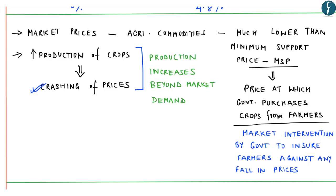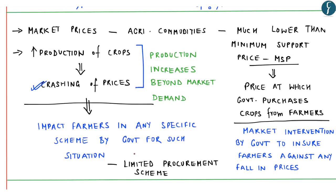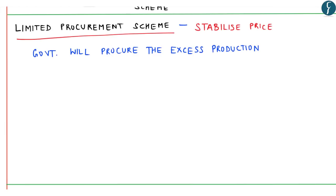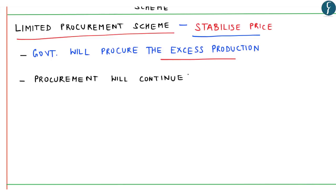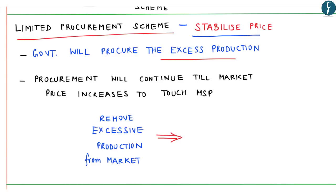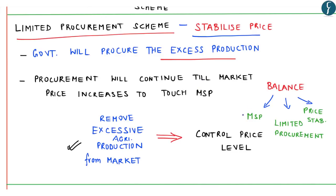This impacts farmers in the absence of any price support policy by the government in such extreme situations. The article has suggested a limited procurement scheme, primarily to stabilize prices. This can be done when the government procures the excess production. Under this scheme, procurement will continue until the market price increases to touch MSP. The idea is to remove excessive production from the market so that the price level which had crashed comes back to the original level. Thus, there is a need to find a balance between MSP, limited procurement and price stabilization.